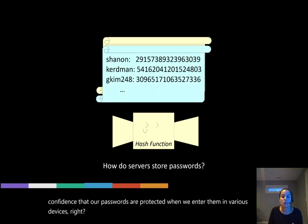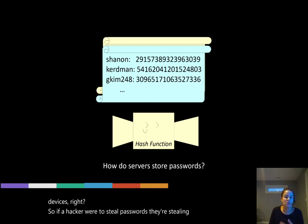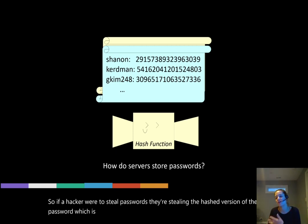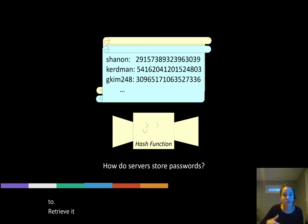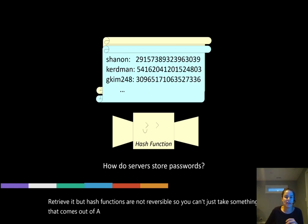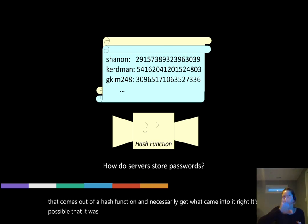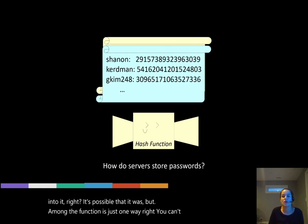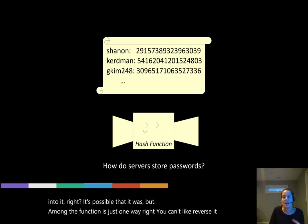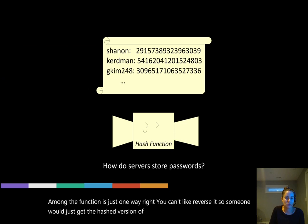And so if a hacker were to steal passwords, they're stealing the hashed version of the password, which is really useless unless you have the hash function itself in order to retrieve it. But hash functions are not reversible. So you can't just take something that comes out of a hash function and necessarily get what came into it. It's possible that it was, but the function is just one way. You can't like reverse it. So someone would just get the hashed version of the passwords instead of the passwords themselves.